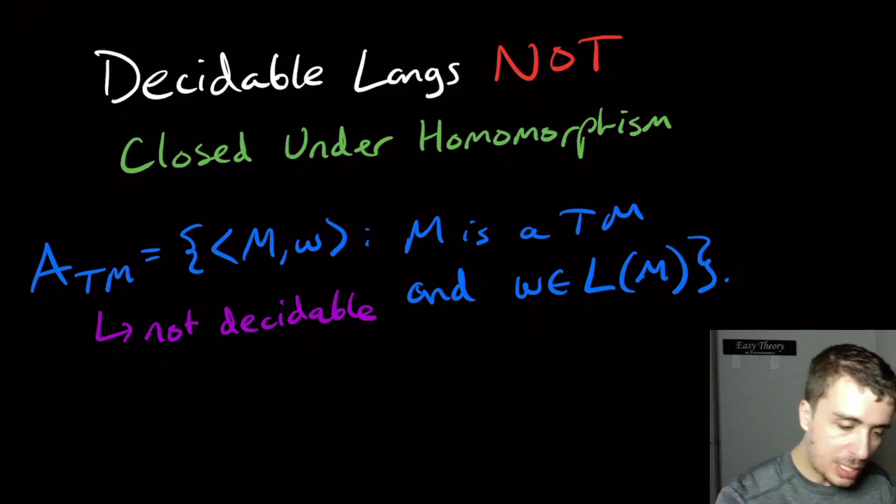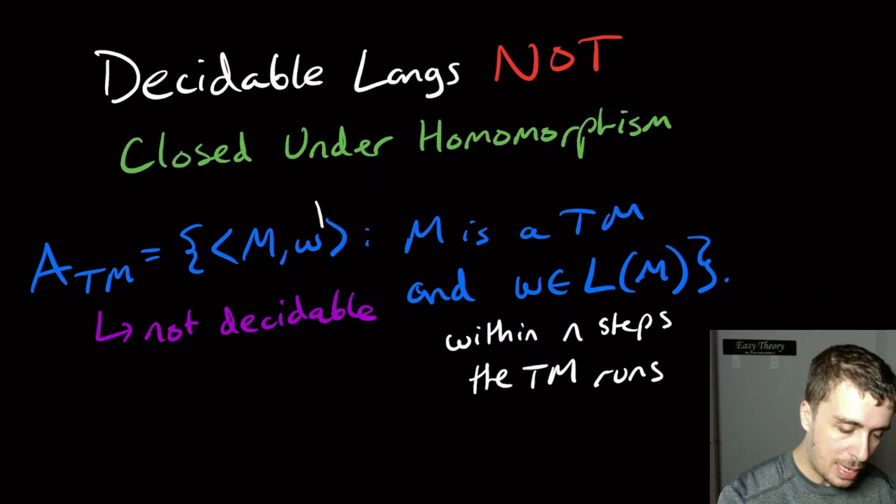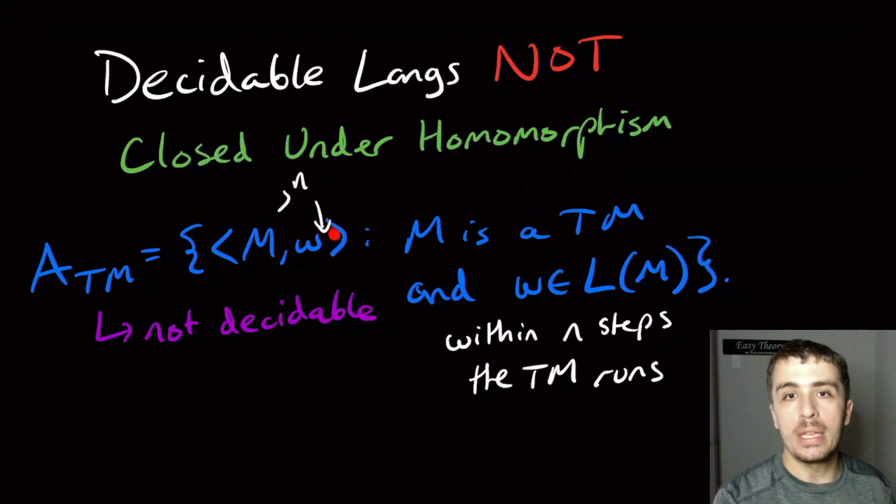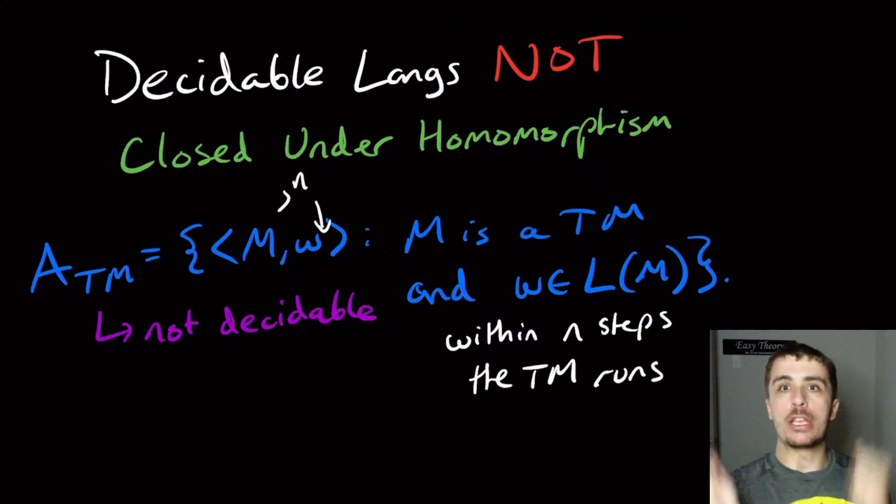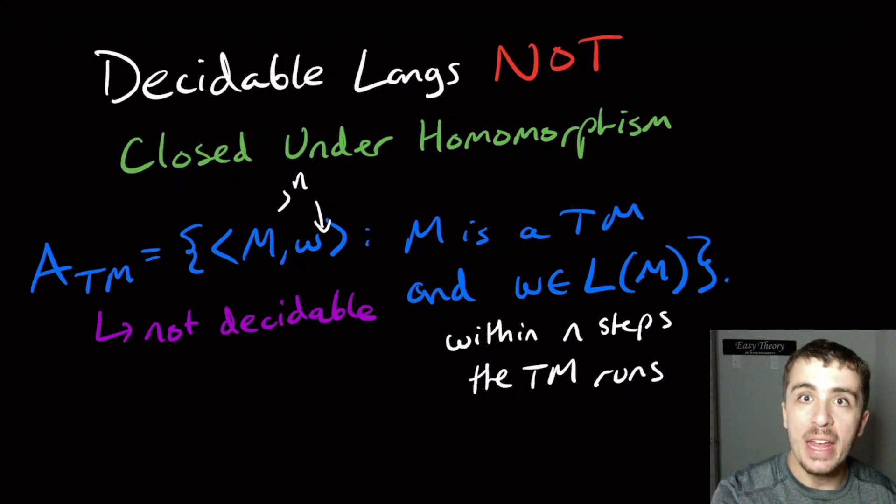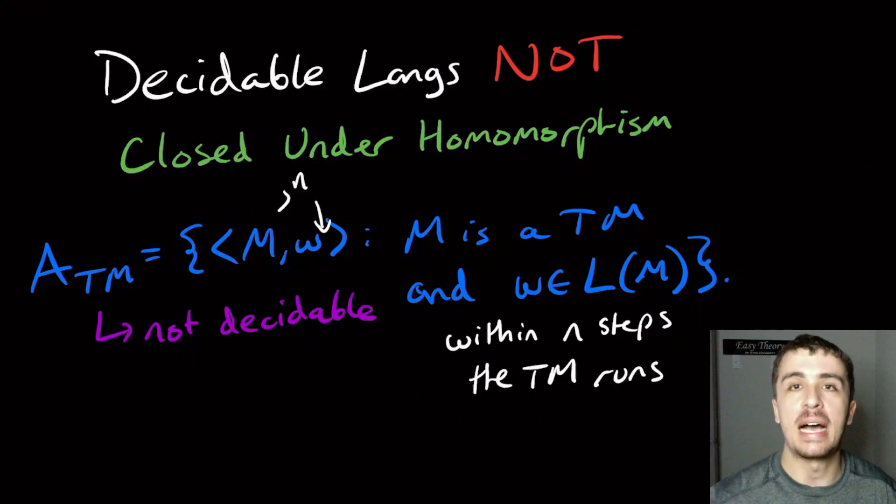But let's suppose that we enforced a condition within n steps, the Turing machine runs, where I put in here, the condition, the number n right here. So if I put the number n as input right here, then this problem is decidable in that particular case, because I can just run the Turing machine for n steps. So how can we actually bake this into a different problem and use a homomorphism to land on the acceptance problem for Turing machines, which is obviously not decidable. So this is how we're going to approach it.